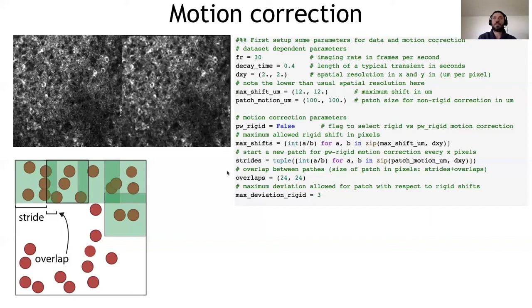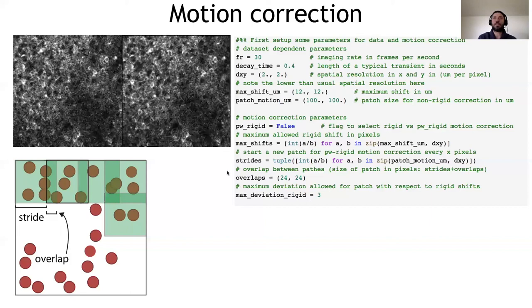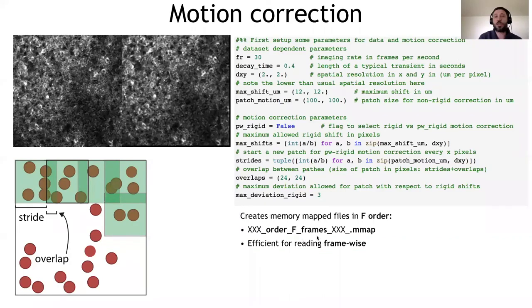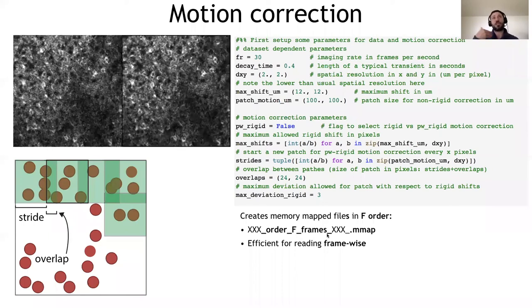Memory map files are an infrastructure to perform operations directly on the data that is stored on the hard drive. So instead of loading 100 gigabytes of a movie, maybe you say, I just want a subset. And in this case, you can use a memory map infrastructure. However, when you use this type of file format, you have to pay attention to the way you store the data on the hard drive. You might notice here, there is F order.